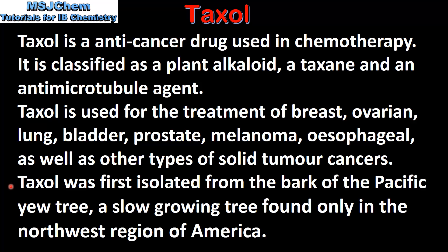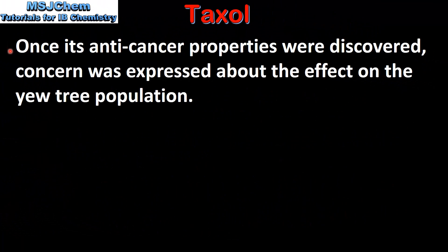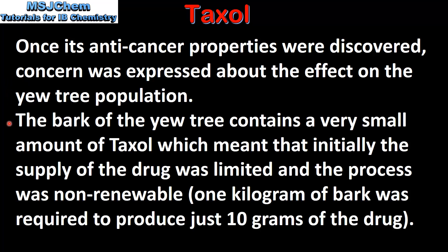Taxol was first isolated from the bark of the Pacific yew tree, which is a slow-growing tree found only in the northwest region of America. Once its anti-cancer properties were discovered, concern was expressed about the effect on the yew tree population. The bark contains a very small amount of Taxol, which meant that initially the supply of the drug was limited and the process was non-renewable. For example, 1 kg of bark was required to produce just 10 grams of the drug.